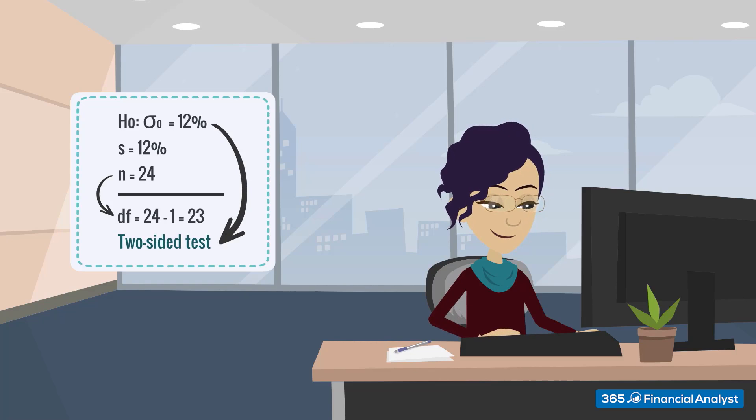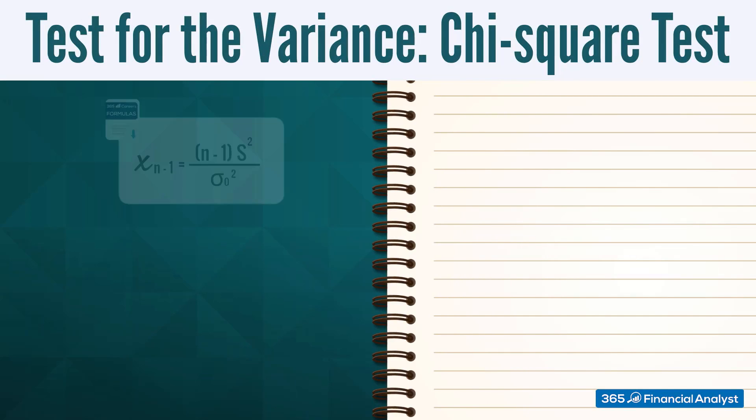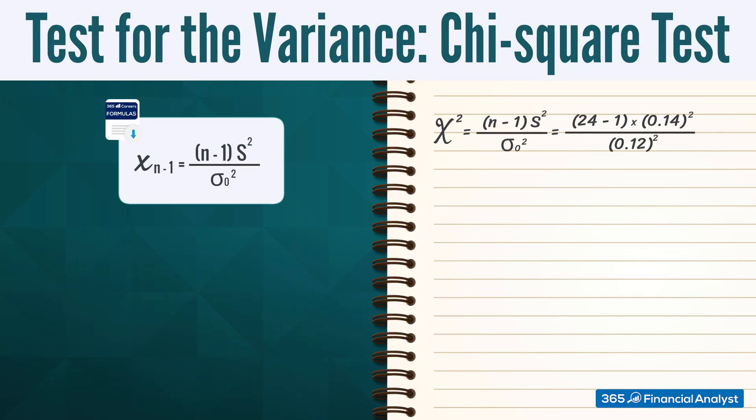What's left is to calculate the actual chi-square statistic. As per the formula, we would have 23 times 0.14 squared divided by 0.12 squared. Please note that we can't have a negative chi-square statistic, as we have two variances raised to the second degree and the number of degrees of freedom cannot be negative. We obtain a chi-square statistic of 16.9.